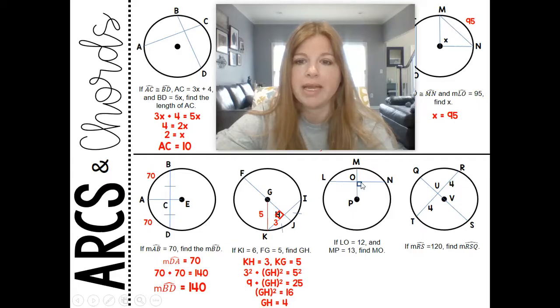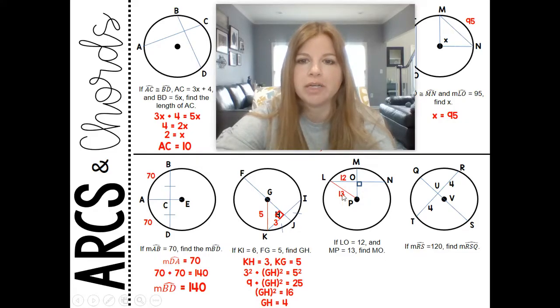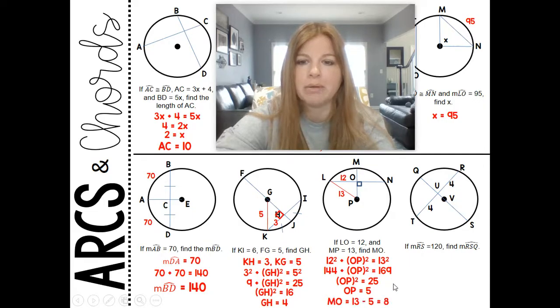Next one: if LO equals 12 and MP equals 13, find MO. Okay, so MO is actually not part of the right triangle, it's part of the entire radius. But if I know LO is 12, and it says MP is 13, and MP is a radius, let me make that same radius here to make a right triangle. Let's think about this. I can use my Pythagorean theorem to find OP. That's not what I need, I need MO. So if I use Pythagorean theorem in this right triangle to find OP, then since it's part of the entire radius, once I have that value, I would just do 13 minus that value to get MO. 12 squared plus OP squared equals 13 squared. That's going to bring us to getting OP is 5. And then if OP is 5 and the entire length is 13, then 13 minus 5 gives me that MO, which is 8.